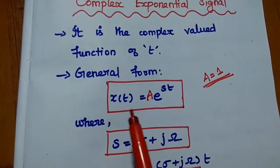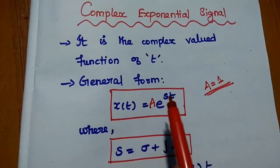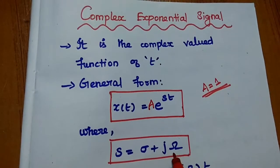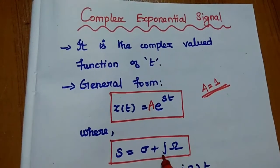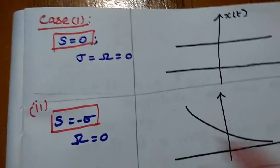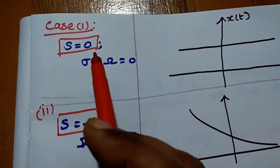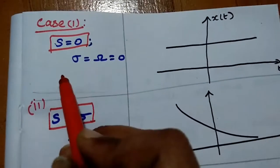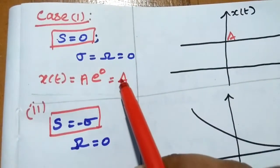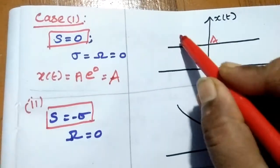The general form of complex exponential is A·e^(st) where s is a complex-valued parameter. We can consider different cases with respect to the value of s. Case 1: s = 0, meaning sigma = 0 and omega = 0. Then x(t) = A·e^0 = A, which is nothing but a DC signal.